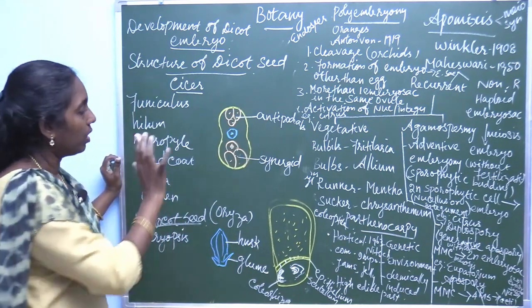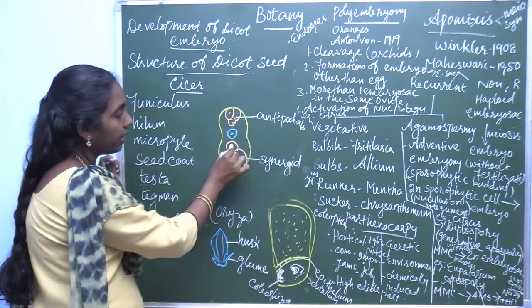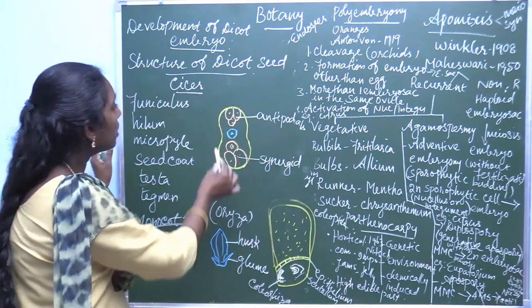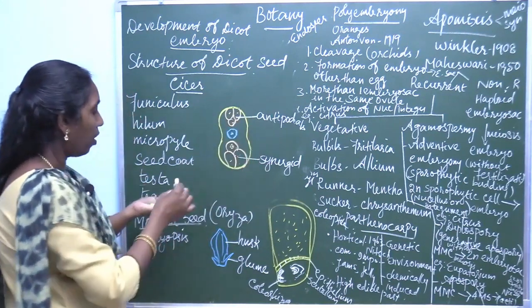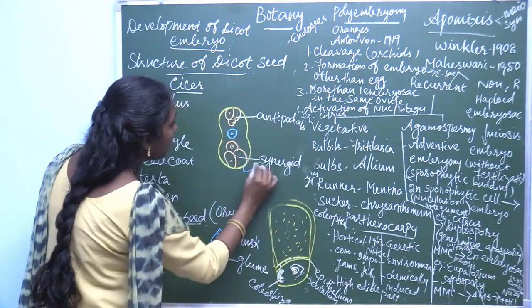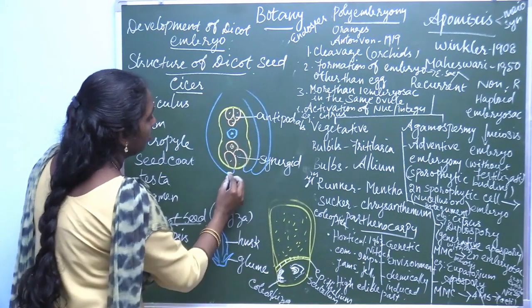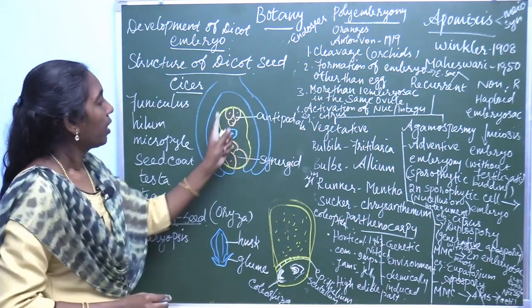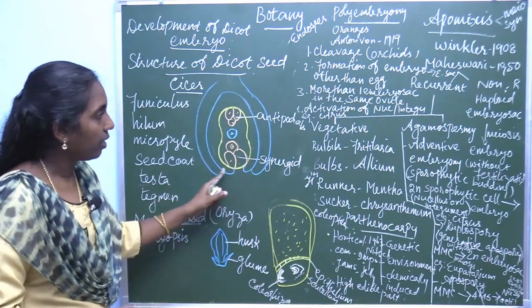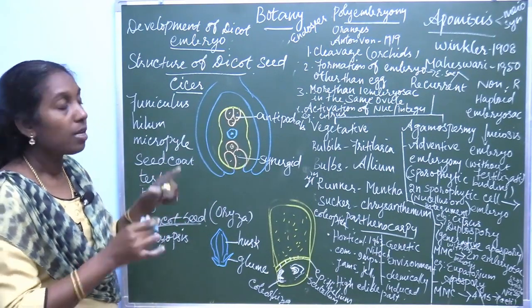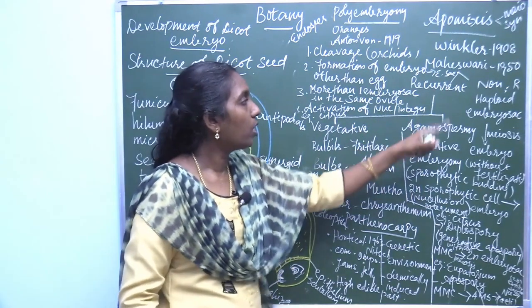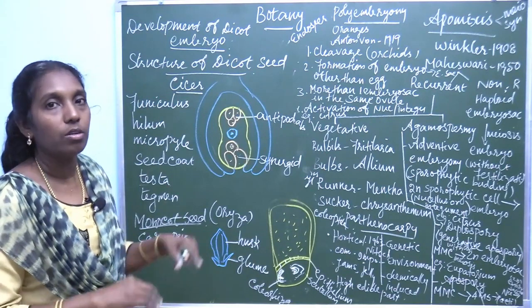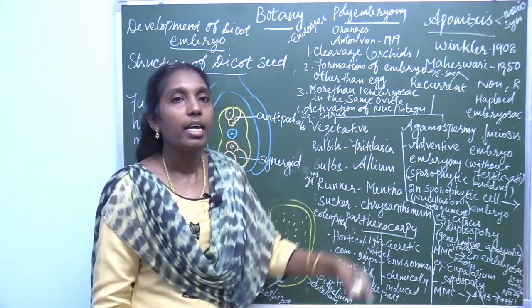In normal fertilization the male gamete fuses with the egg to form the embryo. But in non-recurrent apomixis, syngamy — the fusion of egg and male gamete — is absent. The haploid embryo sac is formed; from this haploid embryo sac a haploid embryo develops without fertilization. Reduction division takes place but syngamy is absent. That is called non-recurrent type of apomixis.